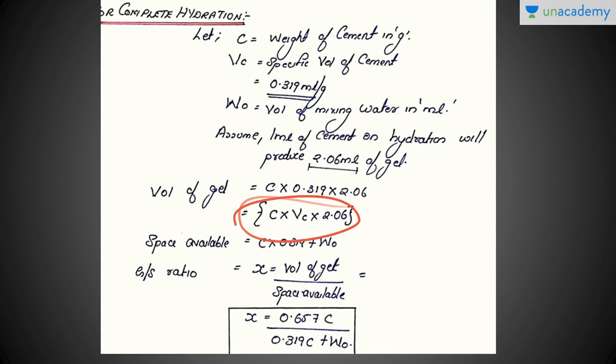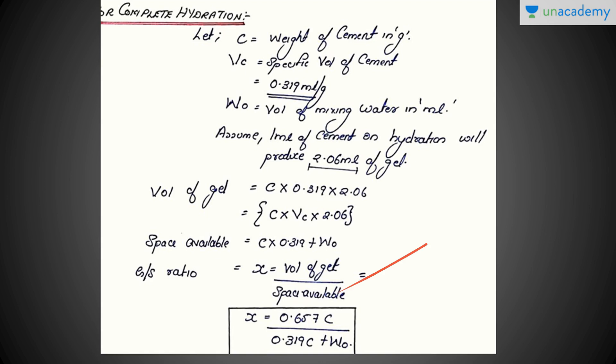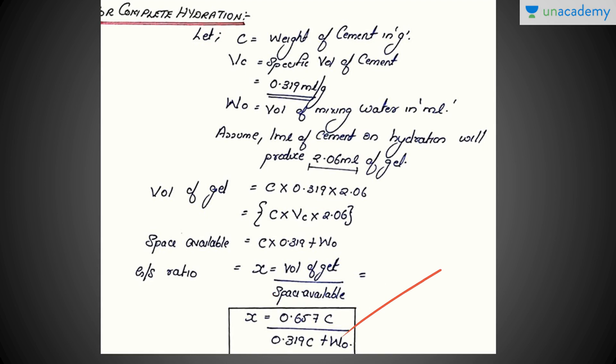Now let's calculate the volume of space available, or the volume of capillary pores. We have the weight of cement times specific volume of cement plus the volume of mixing water: (C × VC) + W₀. The gel space ratio, from the definition, is the volume of gel divided by the volume of space available. Putting all these calculated values into the ratio, we get: X = 0.657C / (0.319C + W₀). This is the gel space ratio for complete hydration.